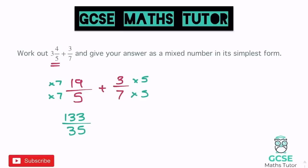On the right fraction, we times both by 5, so 3 becomes 15 and 7 becomes 35. Now we can add these together, just adding the numerators: 133 plus 15 gives us 148, and that is over 35. Remember, you don't add together the denominators. So we've got 148 thirty-fifths.